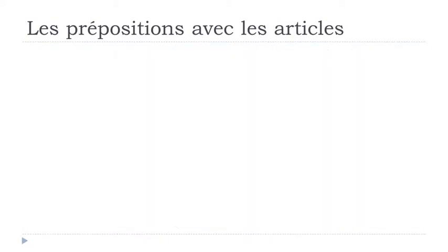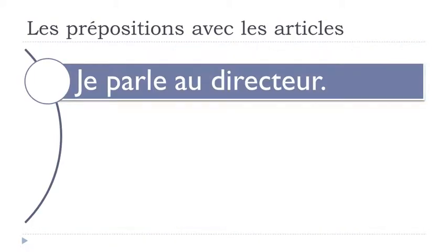So let's have a look now, keeping the same verb parler. You can see that it changes a little bit. A plus LE will become AU - you write it AU, you pronounce it AU. Je parle au directeur - I talk to the director.